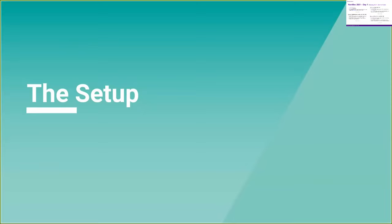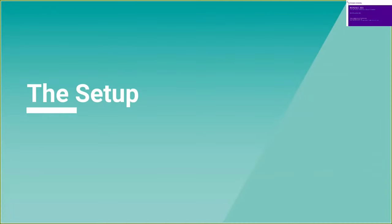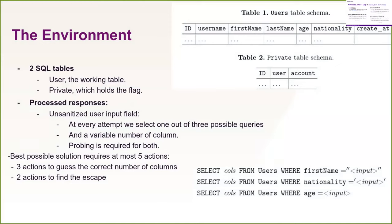In this work we try to understand whether a reinforcement learning agent can find a vulnerability or flag within a database. The database is an in-memory database. The agent can send GET queries and receive a simulated page. There are two database schemas: one with user information — the working table that clients are supposed to use — and a private table, which must be accessed via a UNION query and contains private information.